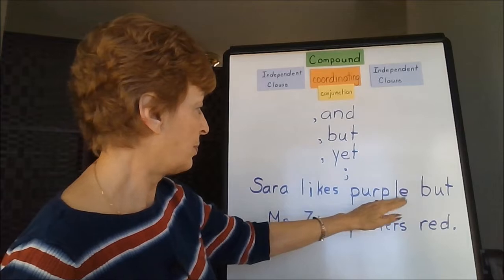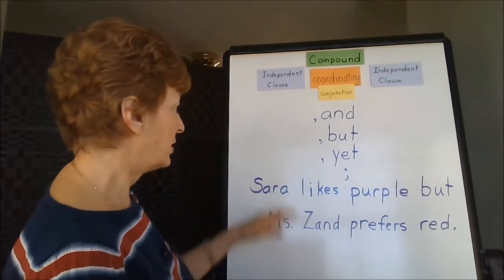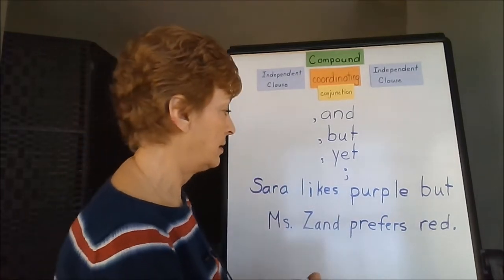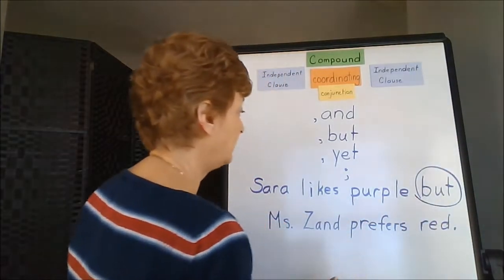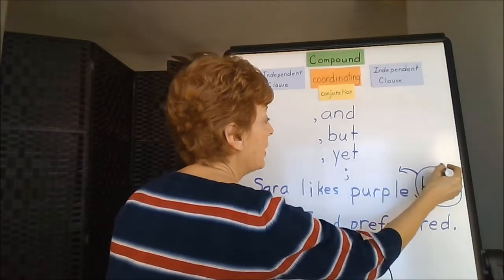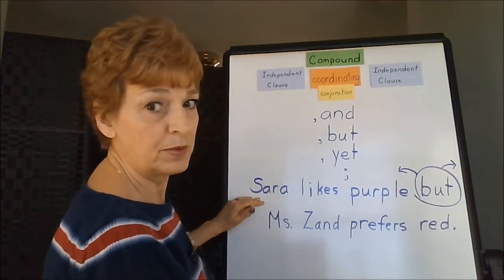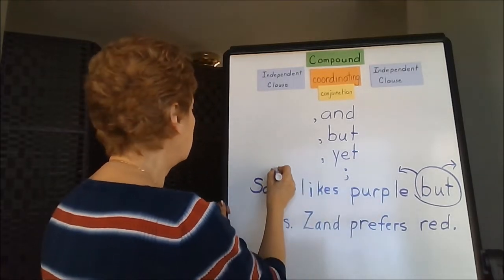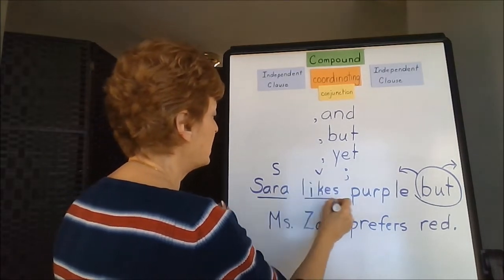Sarah likes purple, but Miss Zand prefers red. The conjunction in this case is the word 'but.' We are going to be looking for a subject and verb on both sides of it. In front of the word 'but,' we've got 'Sarah likes purple.' Here's Sarah, and she likes — so our subject and verb is here.